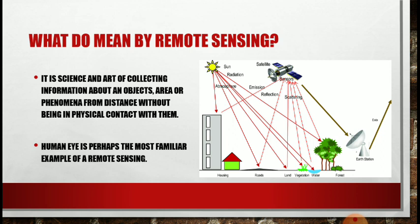The human eye is perhaps the most familiar example of remote sensing. In the image you can see various components or parts of a remote sensing system: sun, atmosphere, satellite, sensor, earth surface, earth station, etc.